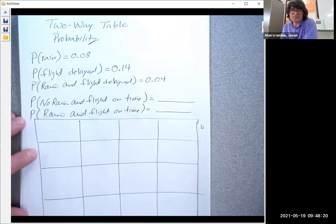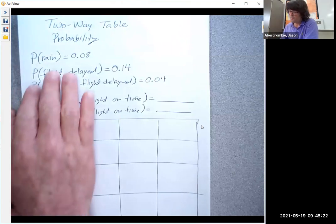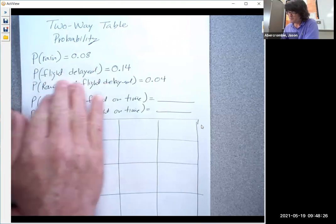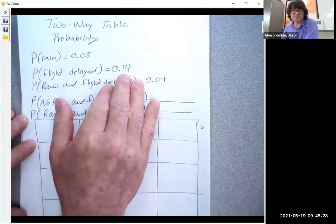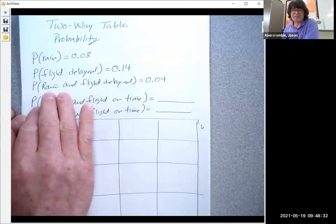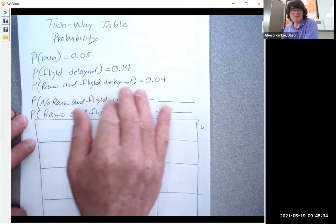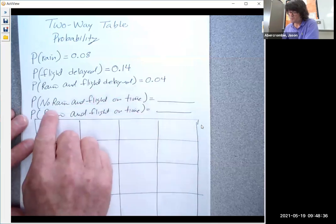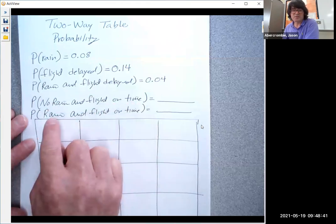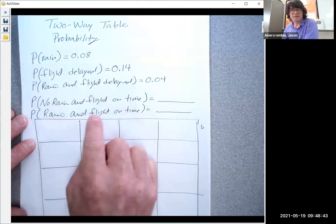So what I've got here to start is a situation where we're at an airport. There's an 8% chance of rain. There's a 14% chance that a flight is delayed. The chance that it rains and the flight is delayed is 4%. I'm asking two questions. What's the chance there's no rain and the flight is on time? What's the chance there's rain and the flight is on time?